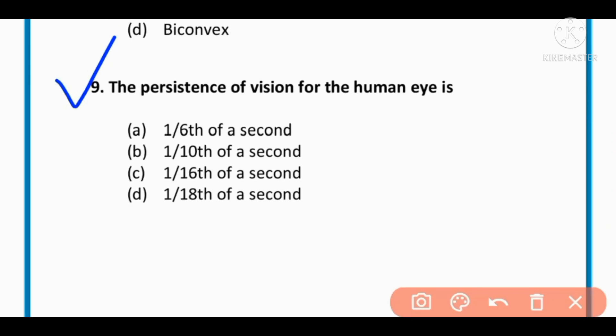MCQ number 9: The resistance of the vision of human eye is 1/6th of skin, 1/10th of skin, 1/16th of skin, or 1/18th of skin. The correct option is C: 1/16th of skin.